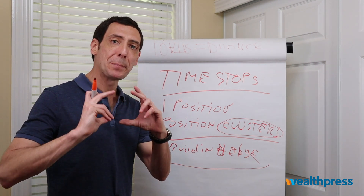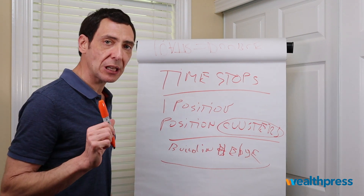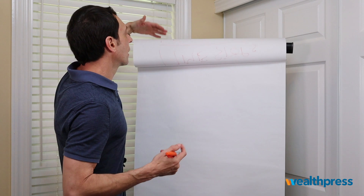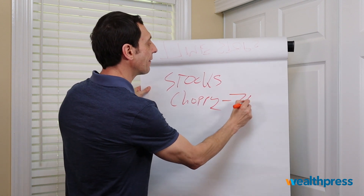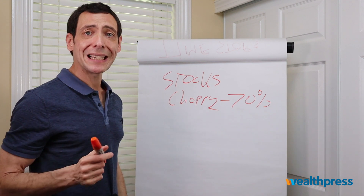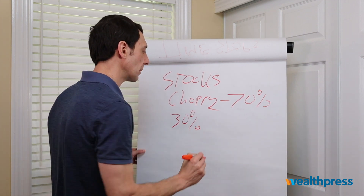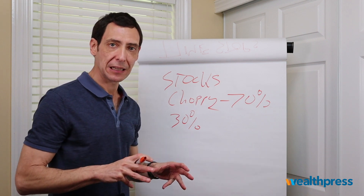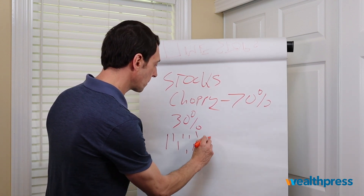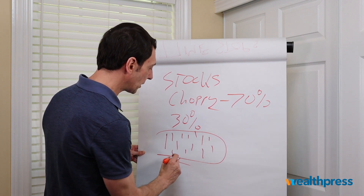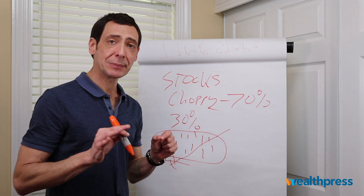A time stop gives you a built-in hedge so you don't have to have a fixed stop loss following your position around. Why are time stops effective? Stocks are choppy 70% of the time — the stock market is a counter-trend market. That means it's only trending 30% of the time. When stocks are choppy and not trending, you tend to get a lot of false stops. The stock market goes sideways, and one wrong move and you get stopped out — then the stock moves back up. A time stop prevents you from getting stopped out prematurely.